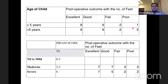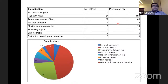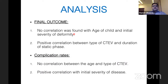Patients under five years showed better correction than those over five. The most important complication was pain with the fixator — every child complained of significant pain. The second most common complication was edema of the feet. Final outcome showed no correlation with age of child or initial severity of deformity, but positive correlation between type of CTEV and duration of static phase. Complication rates showed positive correlation with initial severity of disease.